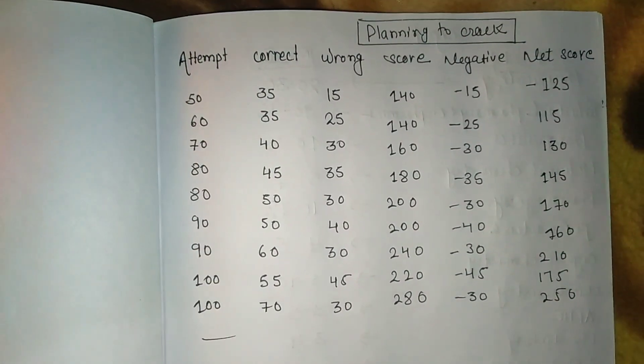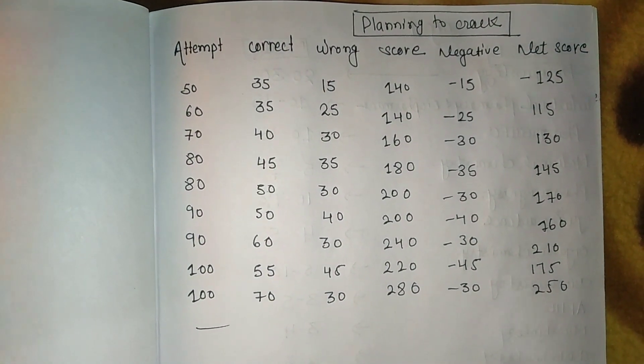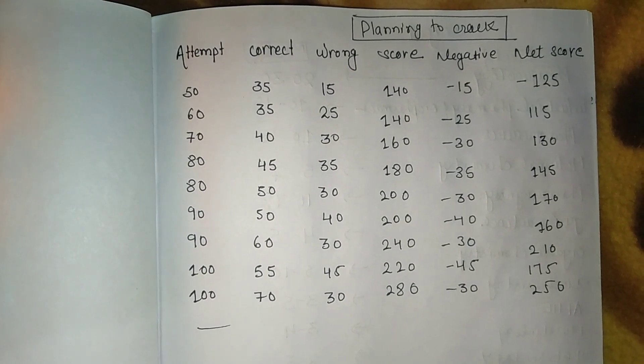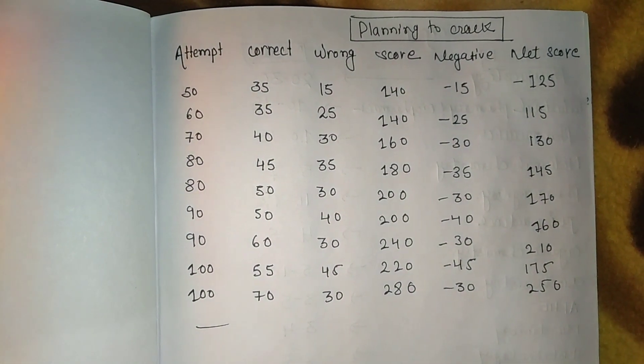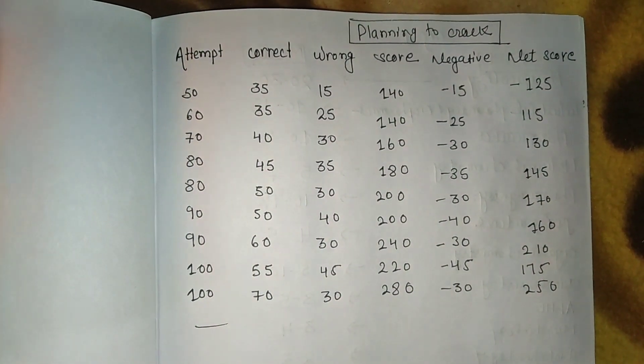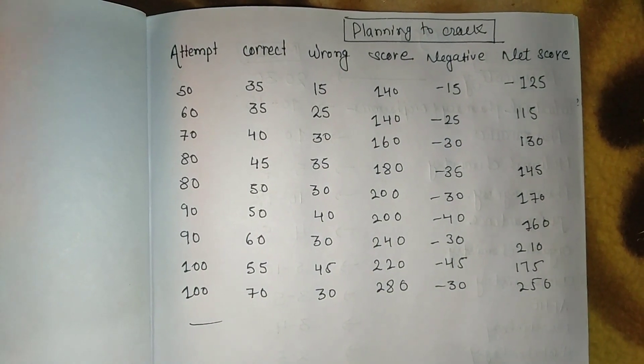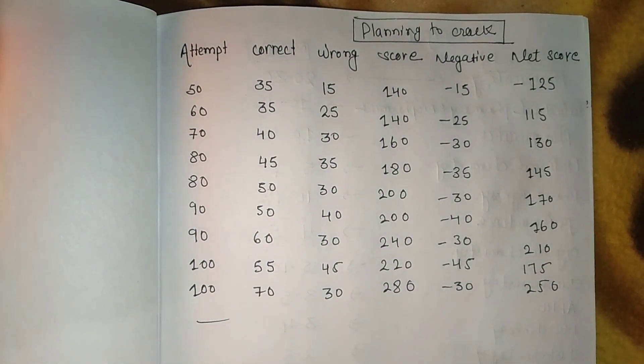Set up your strategy according to this: attempt, correct, wrong, score, negative, net score. This planning which I followed to qualify two times.